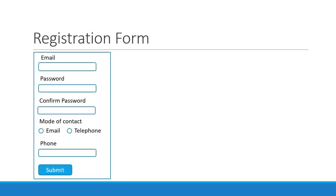Welcome back everyone. In this video we are going to implement a user registration form. The form will have five fields: email, password, confirm password, a mode of contact which is either email or telephone as radio buttons, and then a phone number.